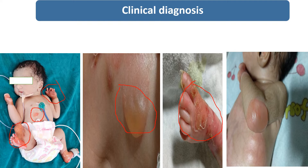Even during the follow-up, the newborn is having new bulla formation at the elbow, and these are the healed lesions over the trunk.